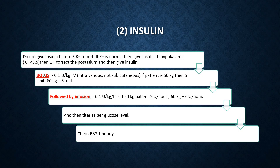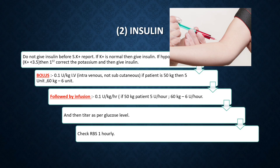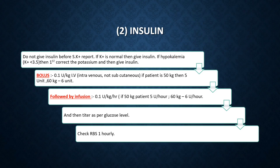If serum potassium is normal, the insulin dose starts with a bolus of 0.1 unit per kg IV — intravenous, not subcutaneous. For a 50 kg patient, the dose is 5 units; for a 60 kg patient, 6 units, and likewise. This is followed by an infusion of 0.1 unit per kg per hour.